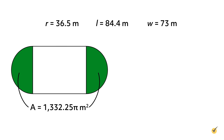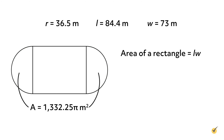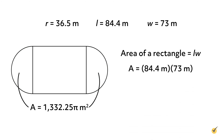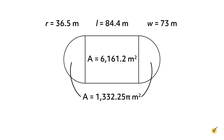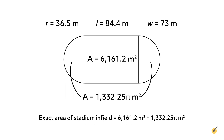Remember, that's the exact area. We'll find the approximate total area after we find our rectangle's area. The area of a rectangle is equal to length times width. Our length is 84.4 meters and our width is 73 meters. So if we multiply these two together, we get 6,161.2 square meters. Now that we know the area of the parts that make up our stadium shape, we simply add them together. So the exact area of our stadium infield is 6,161.2 plus 1,332.25 pi square meters.